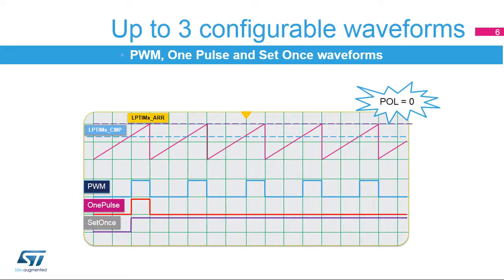The low-power timer can output various kinds of waveforms even when the microcontroller is in Stop-0, Stop-1, and Stop-2 low-power modes where almost all internal clock sources are turned off. The LPTIMX_CMP and LPTIMX_ARR registers, in conjunction with the WAVE bitfield from the LPTIMX_CFGR register and SNGSTRT from the LPTIMX_CR register, are used to control the output waveform. The output waveform is either a typical PWM signal with period and duty cycle controlled by LPTIMX_ARR and LPTIMX_CMP respectively, or a single pulse with the last output state defined by the configured waveform.